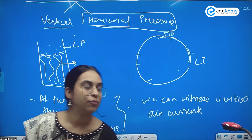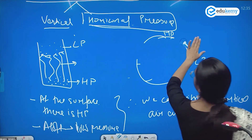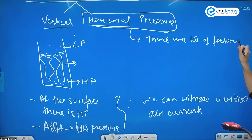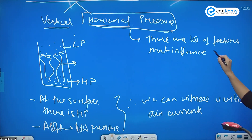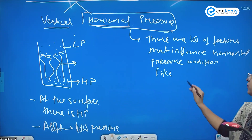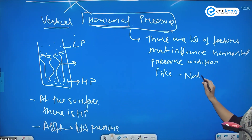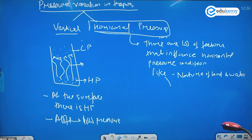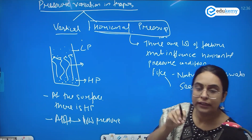The point is that horizontal pressure is influenced by many factors, including the nature of land and water, seasonality — which determines how much heat arrives — and slopes. There are a lot of factors that influence horizontal pressure conditions.